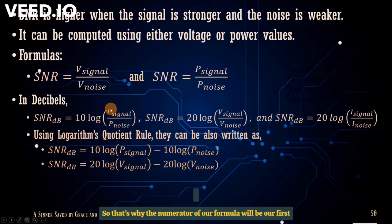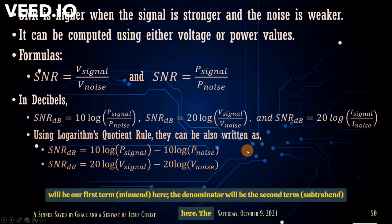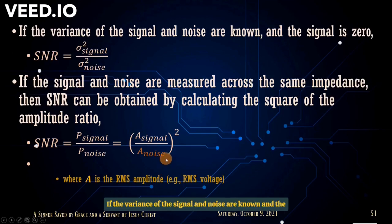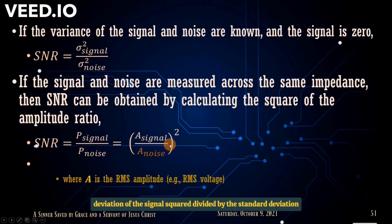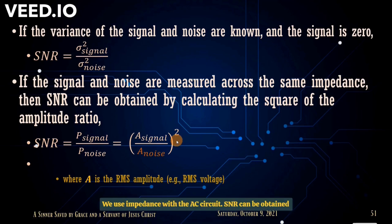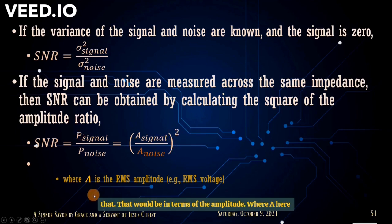If the variance of the signal and noise are known and the signal mean is zero, we use SNR = σ_signal² / σ_noise², where σ is the standard deviation. Signal and noise are measured across the same impedance — impedance being used for AC circuits, resistance for DC circuits. SNR can also be obtained by calculating the square of the amplitude ratio, where A is the root mean square amplitude, such as RMS voltage.